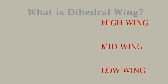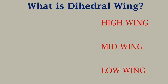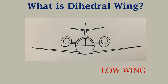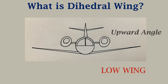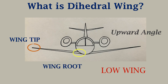Now we will see what is meant by a dihedral wing. Normally, dihedral wings are found in low wing configuration, as seen in most commercial aircraft. In dihedral wings, the wings have an upward angle. In other words, this is the wing root and this is the wing tip. If the wing tip is located above the wing root, then it is called a dihedral wing.